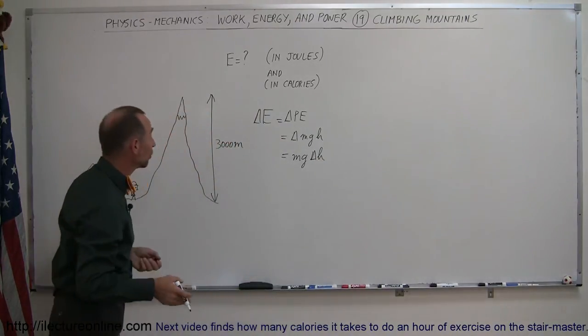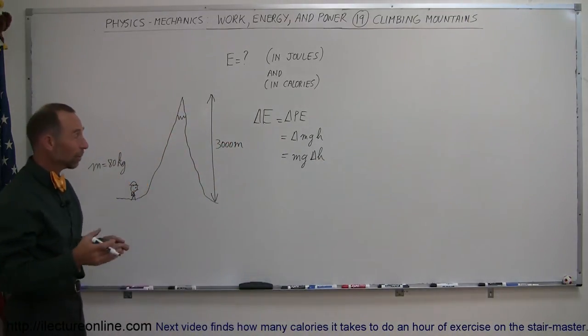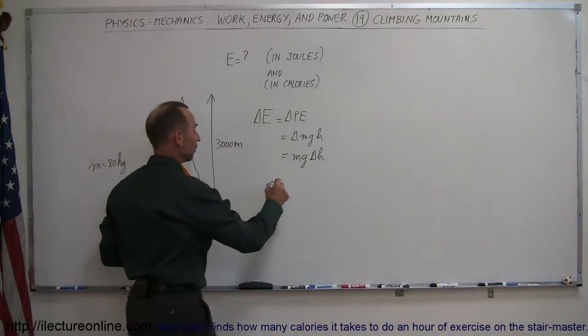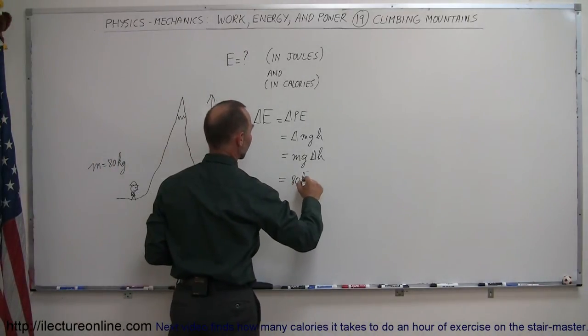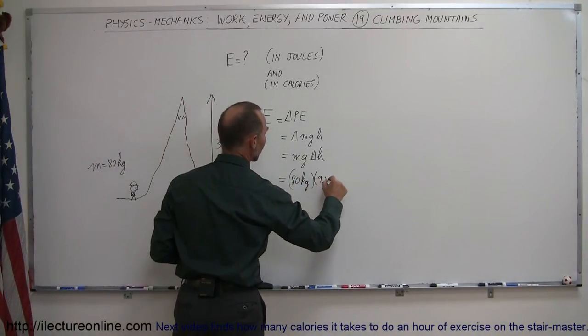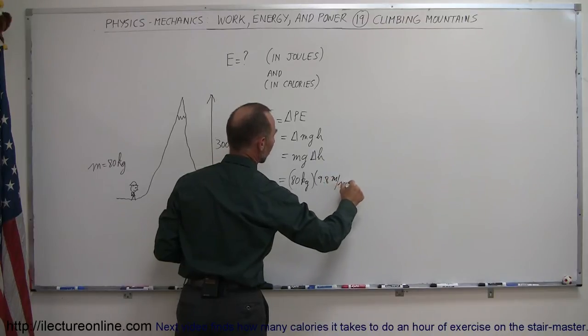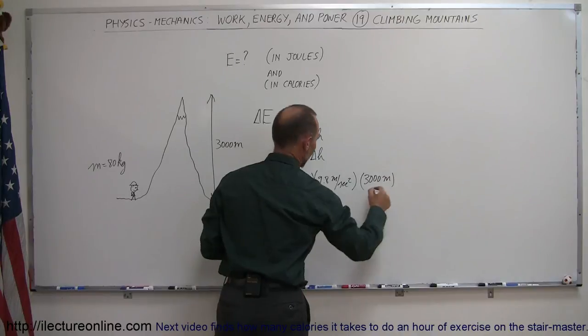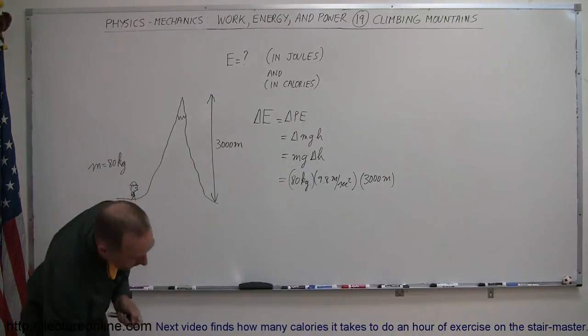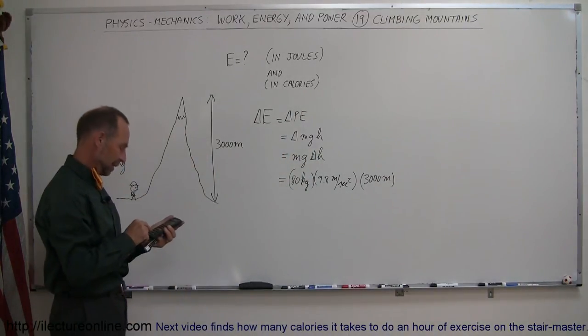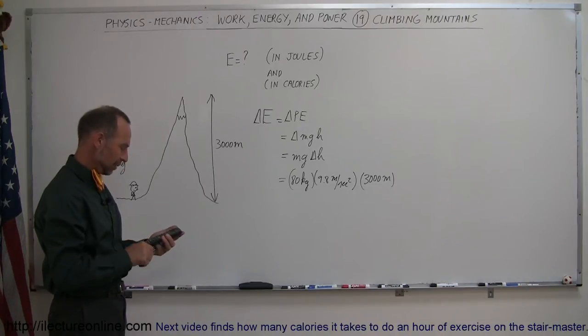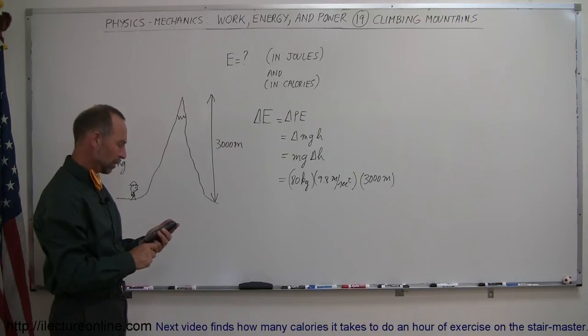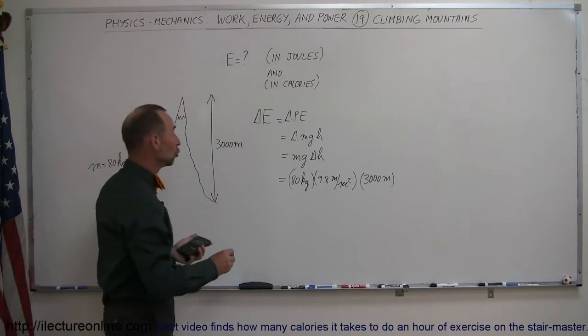So in this case, the change in the height would be the 3,000 meters. So let's plug the numbers in and see what we get. So this is equal to 80 kilograms times 9.8 meters per second squared times 3,000 meters. So let's find out. We have 3,000 times 9.8 times 80 equals, and it looks like 2,352,000 joules.